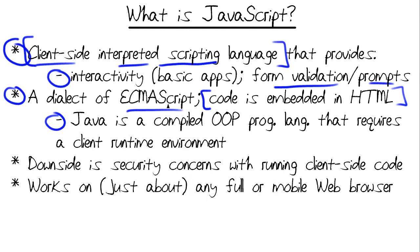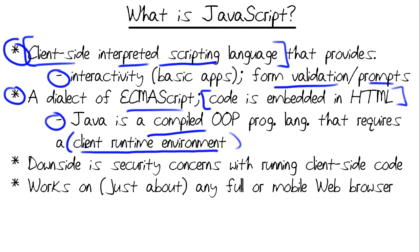Java and JavaScript are oftentimes confused, but they shouldn't be. Although they share the same basic name and some semantic features, Java is a fully-fledged compiled object-oriented programming language. A big differentiator is that Java requires a client runtime environment — a Java Virtual Machine — to be installed on each user's computer in order to run a Java app.